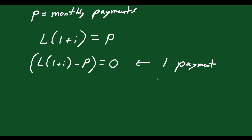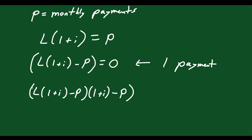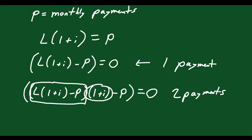Now what if there were two payments? You'd have the previous expression — L times (1 plus i) minus P — multiplied by (1 plus i), and then minus P, all equal to 0. Whatever's left after the first payment gets multiplied by the interest again for another month, and that equals P. Both P's are the same because with loans you make the same payment each month. This is representative of making two payments to pay off the loan.